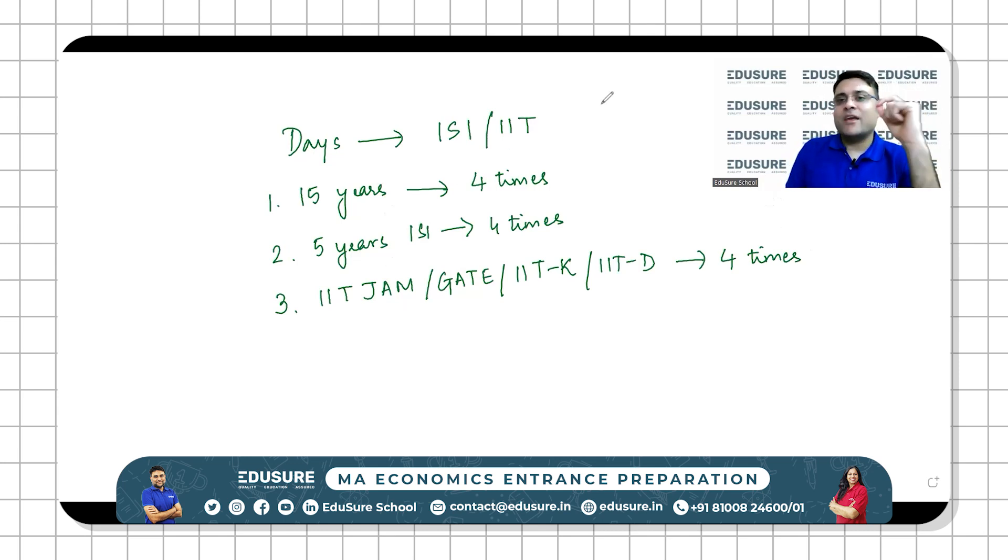Each and every day at EduSure, you are having a revision class wherein we identify the important concepts of every topic. Yesterday we did a topic called production cost. We were able to identify four key concepts in the topic and do a few practice questions of each concept. Now 80 to 90 percent of the questions that have appeared from production and cost are based on these four concepts.